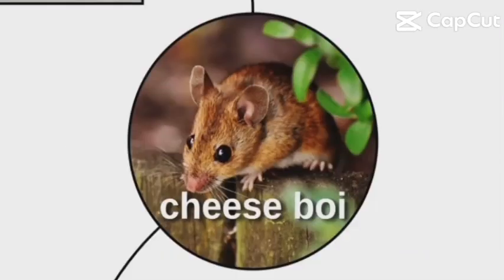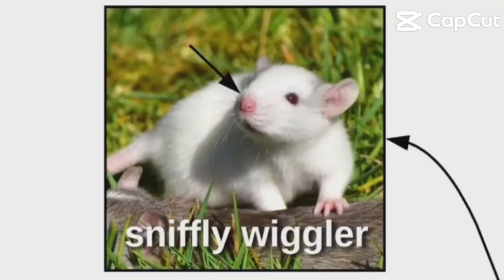To understand cheese boys, you have to understand rat anatomy. First, there's the sniffly wiggler, also called the snoot, give it a little boop.